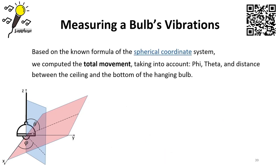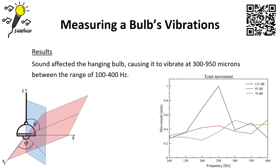Based on the formula of the spherical coordinate system, we computed the total movement of the hanging bulb taking into account phi, theta, and the distance between the ceiling and the bottom of the bulb. We found that sound affected the hanging light bulb, causing it to vibrate at 300 microns across the analyzed spectrum.